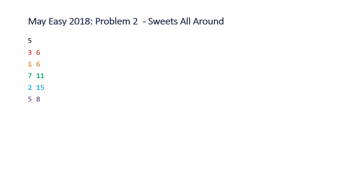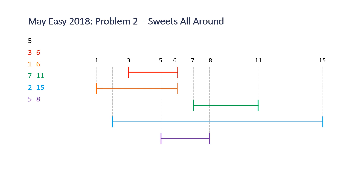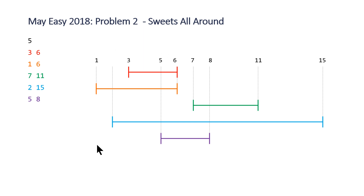If we color-code these we can get a visualization of these ranges, where each color corresponds to one of the students. For the first student, if there are between three and six candies in the classroom, that student will be happy — anything outside that range and they won't be happy. The question is asking what is the minimum number of candies the teacher can buy to make happy the maximum number of students. Just by looking at it, we can see the answer is going to be five, which allows four of the five students to be happy.